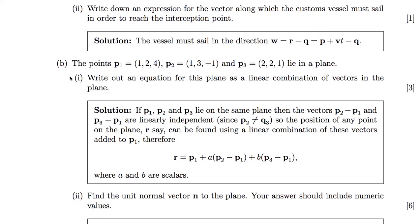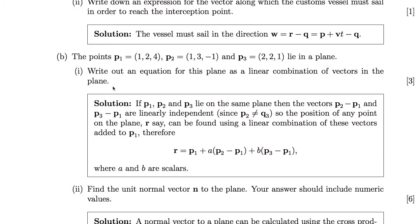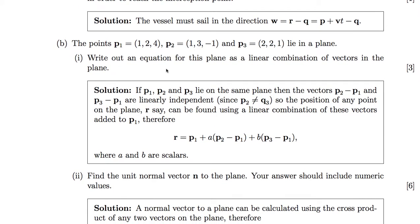Question 1b: we have a position of three points that lie in the plane. The first part of this question is write out an equation for the plane as a linear combination of vectors. Since P2 and P3 are different, the vectors P1 to P2 and P1 to P3 are linearly independent. Therefore, we can calculate the position of any point on the plane, R, as the position vector P1 plus a linear combination of P2 minus P1 and P3 minus P1, where a and b are simply scalars.